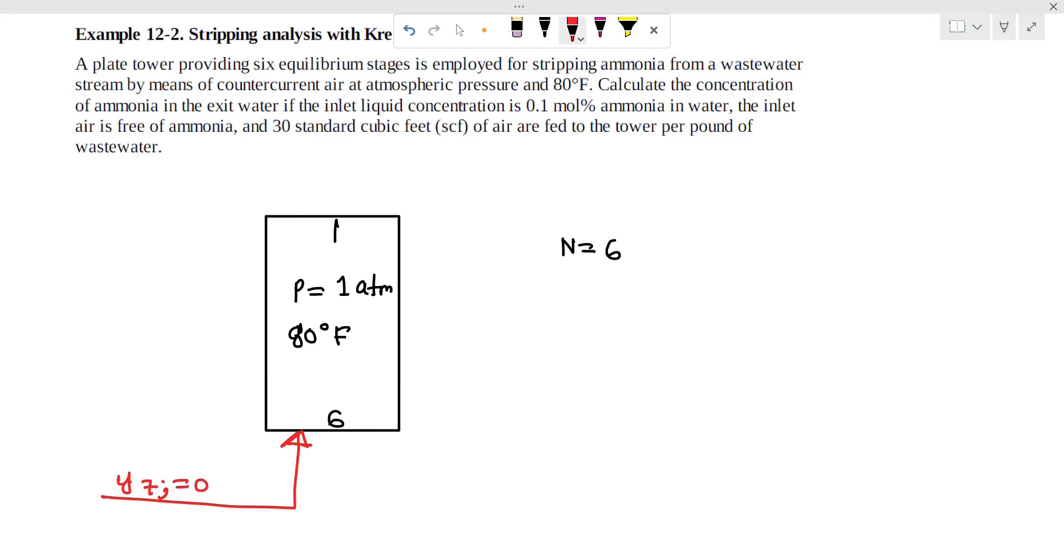Ammonia in the inlet air is zero, meaning y7 is 0. The exit air is where y1 is unknown, and the inlet water x0 is 0.001, and the exit water x6 is equal to what we're looking for.